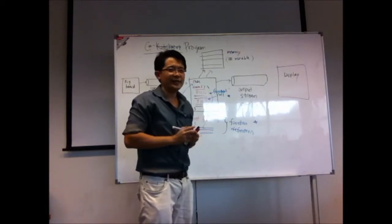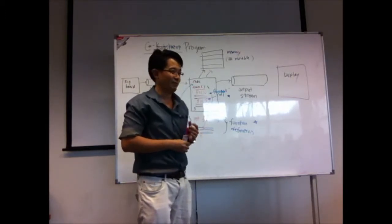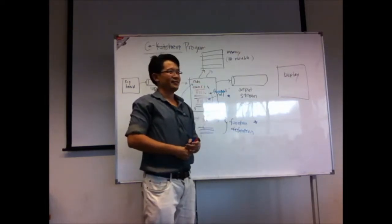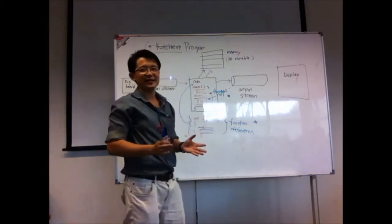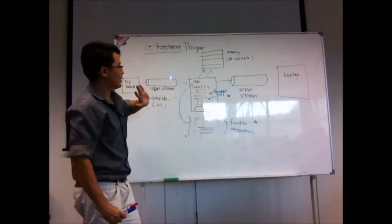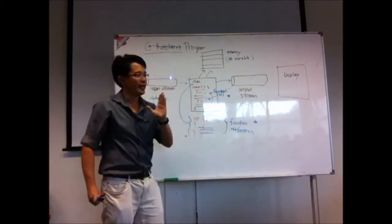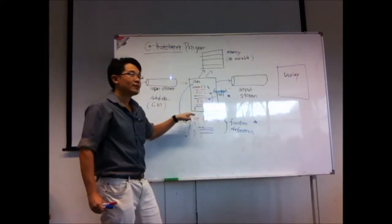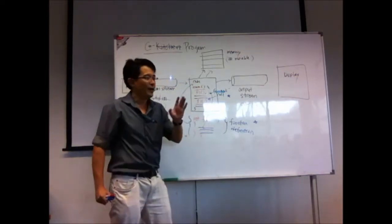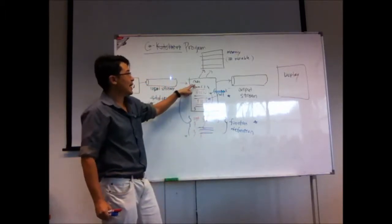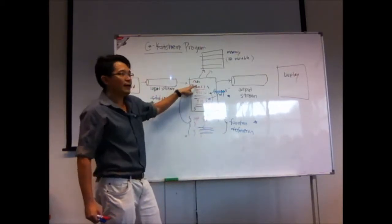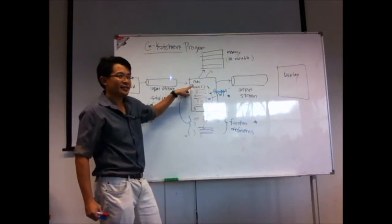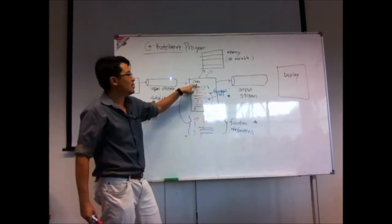Analogy: before you take a stranger out for a meal, somebody has to introduce that stranger to you first. Now, there are examples where the function definition is placed after the main function. You can do that, but you must declare it before the main function — you still need to declare. Before the main function, you declare to tell the main function that the definition of this function exists — believe me, it's coming. That is called function declaration.